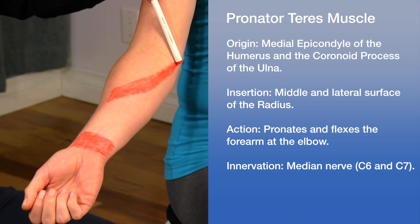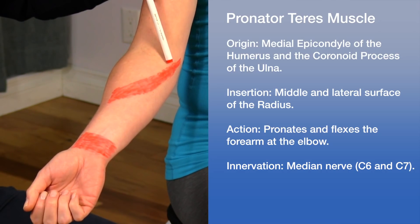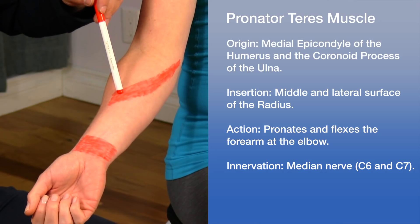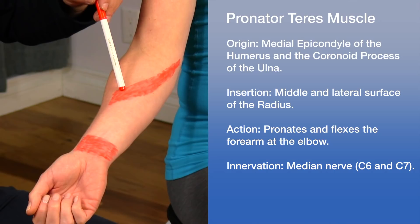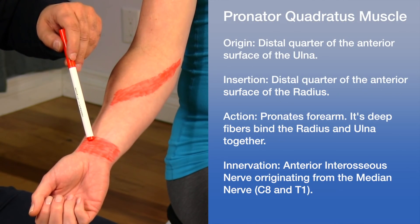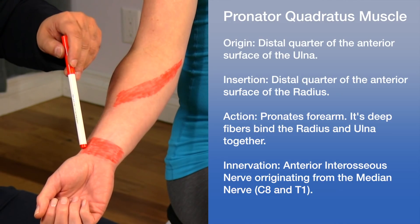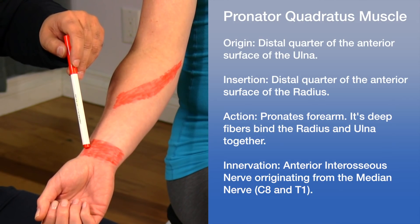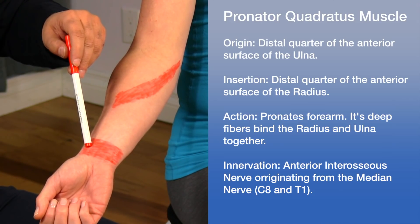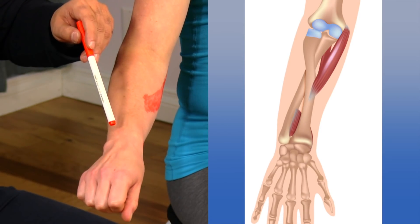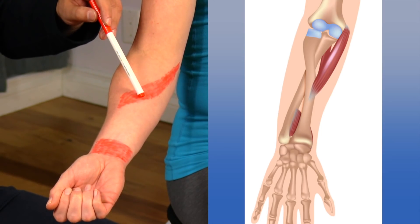The pronator teres arises from the medial epicondyle of the humerus and the coronoid process of the ulna, inserting on the mid-lateral surface of the radius. It is the major pronator of the forearm and also assists in elbow flexion. The pronator quadratus is a square-shaped muscle running between the anterior surfaces of the distal ulna and distal radius. When it contracts, it pulls the radius across the ulna into pronation.